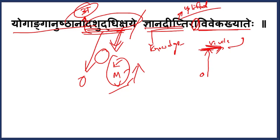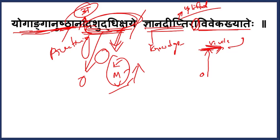Viveka Khyati means the knowledge of the difference between Purusha and Prakriti. Purusha is different; Prakriti is different — that is Viveka Khyati, also called Vishesha Khyati. Khyati means knowledge, so Vishesha Khyati is special knowledge — the special knowledge of the difference between Purusha and Prakriti, Atma and Anatma, right knowledge and false knowledge. Up to that is called the benefit of Yoganga. We already discussed what Viveka Khyati is and its seven stages — Saptabhumi — in the last class.